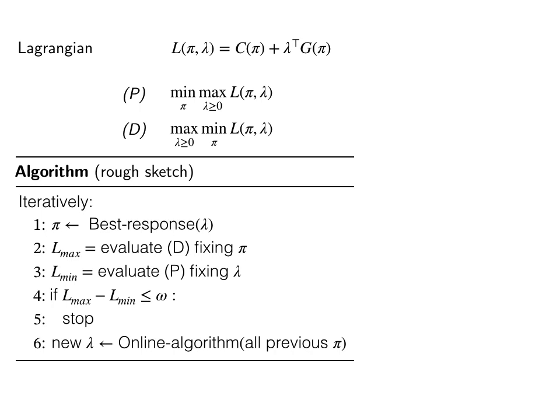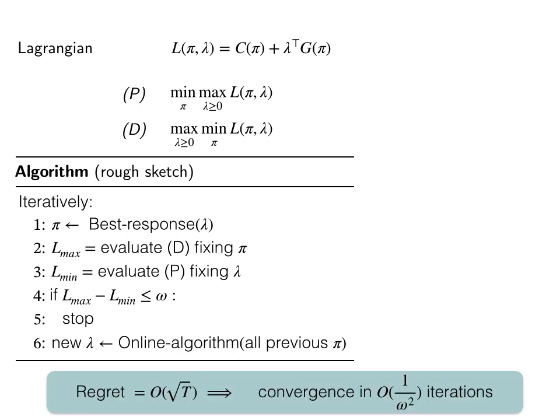Otherwise, the λ player responds using any no-regret online learning algorithm to update to the next λ. And in fact, assuming that the evaluation steps are done exactly, we can show that if the regret is square root of T, then the approximate equilibrium is achieved after 1 over ω squared iterations.